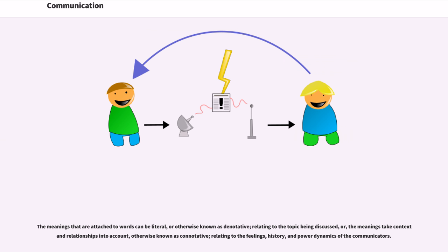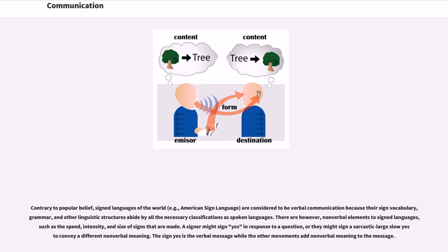Contrary to popular belief, signed languages of the world, for example American Sign Language, are considered to be verbal communication because their sign vocabulary, grammar, and other linguistic structures abide by all the necessary classifications as spoken languages. There are, however, non-verbal elements to sign languages such as the speed, intensity, and size of signs that are made. A signer might sign 'yes' in response to a question, or they might sign a sarcastic, large, slow 'yes' to convey a different non-verbal meaning. The sign 'yes' is the verbal message while the other movements add non-verbal meaning to the message.